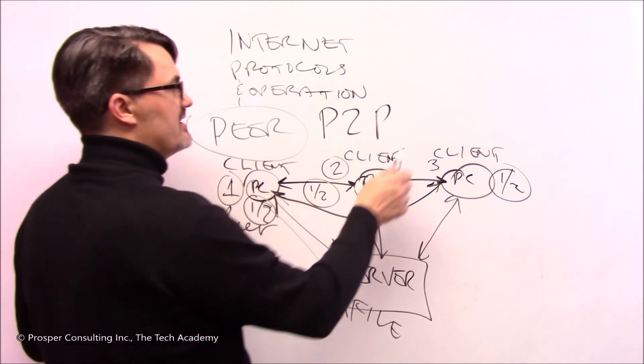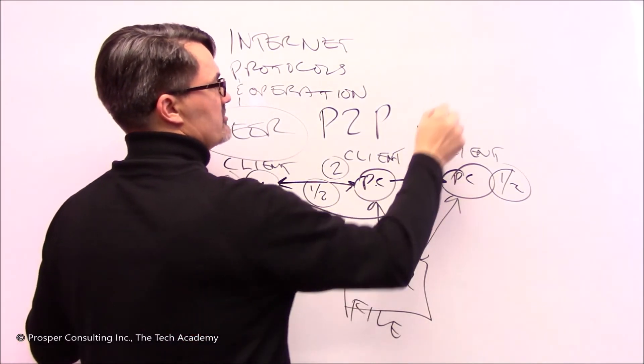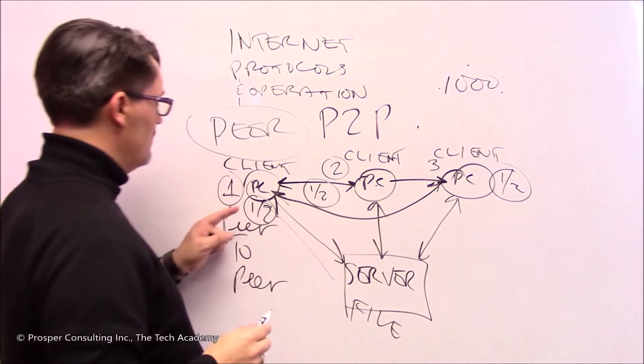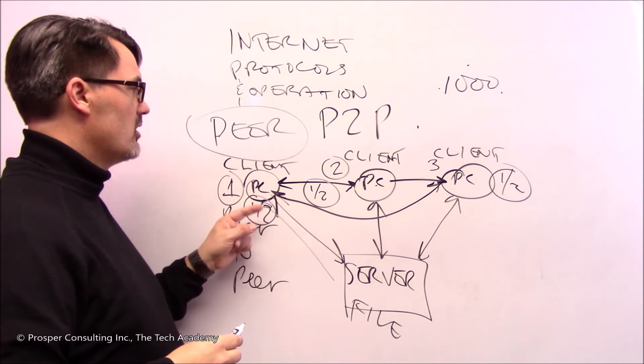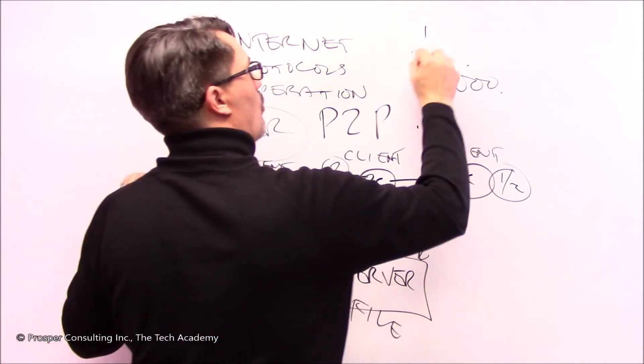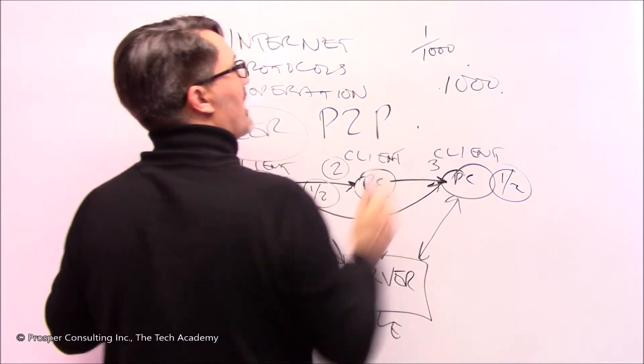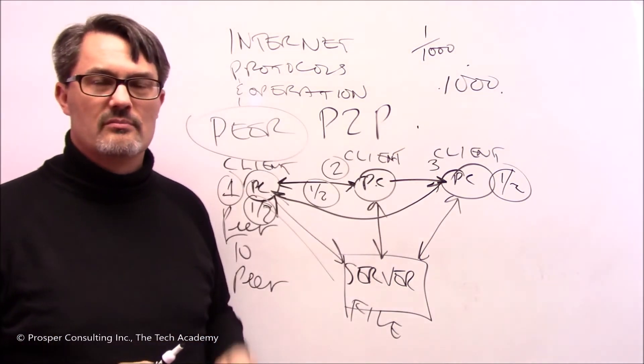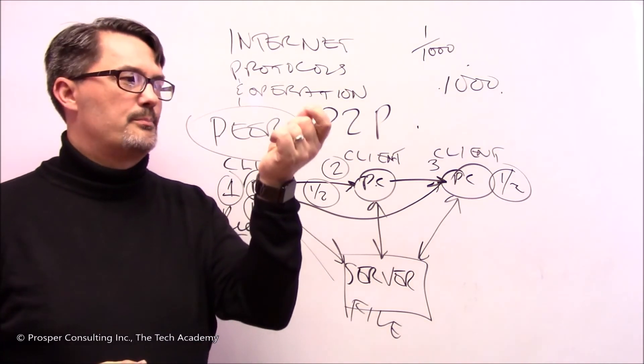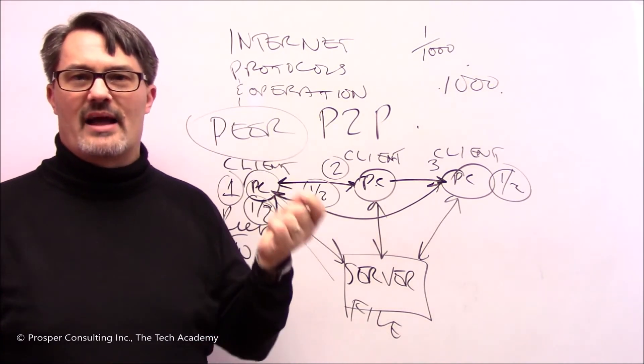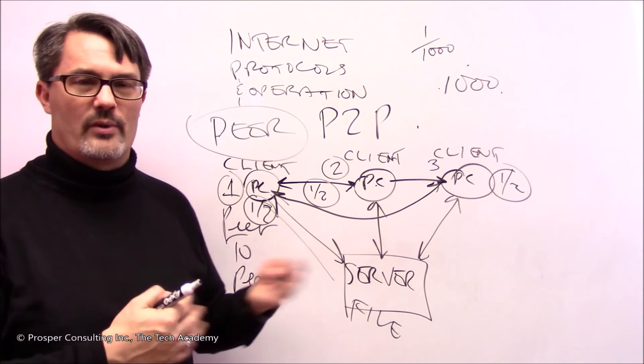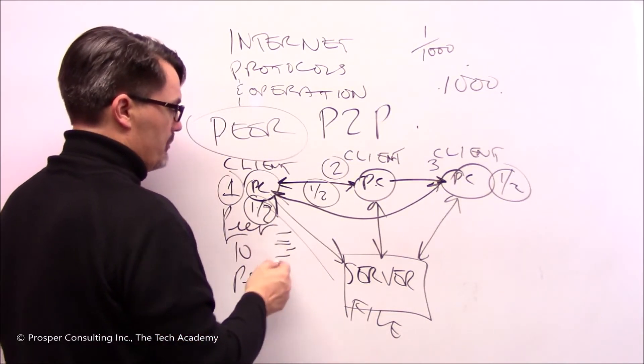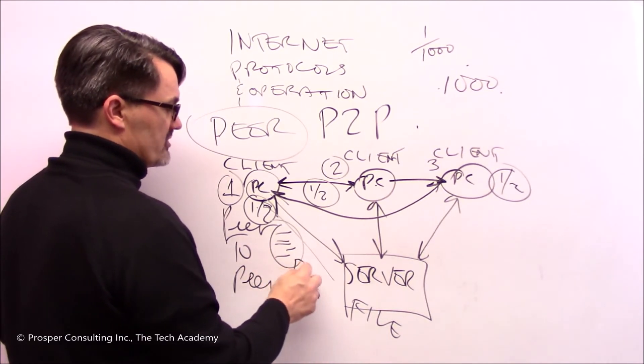Now what if we multiplied these computers that had parts of the file by a thousand? The original computer could issue requests for one one-thousandth of the data to every single one of these computers, one after the other in order. I want part one thousand, I want part nine nine nine, I want part nine nine eight, all the way down. And at the end of the day, when all these are assembled on this computer, you stack them all up, put them together, you recombine them, and you have the original file.